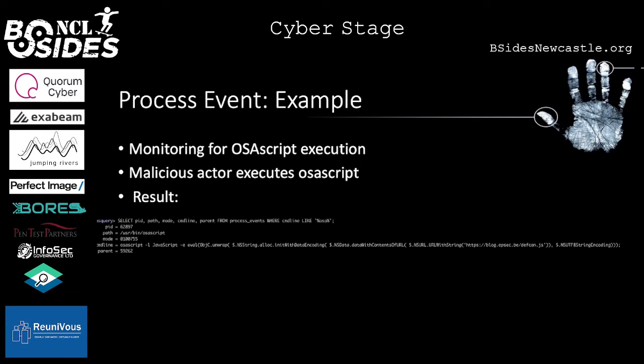When a malicious actor executes osascript, this triggers an event, and the process_events table shows the process ID, the path, the mode, and the command line. The command line in my example tells us that I used osascript to download a payload from the Mythic Apple agent onto my system. If you had alerting set up, you would be able to alert on this and say someone executed osascript — potentially malicious, we need to act on this.